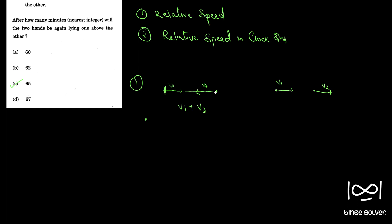This is how relative speed works: we keep one person stationary and see what is the relative speed of the other person from that perspective. Now, when they are moving in the same direction, the relative speed is v1 minus v2. I will explain this concept with an example that will make things more clear — both cases I will explain.